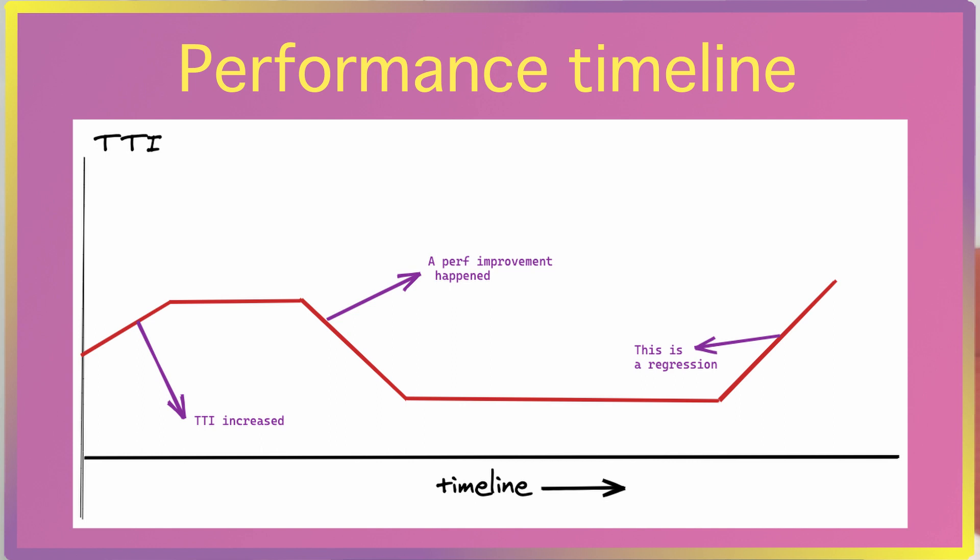Performance is an area where developers are still constantly innovating. What truly prevents a website from slowing down is a perf culture in your development team. Always look at the perf impact of every change you make by making use of good monitoring and alerting. Keep a threshold for the values that you measure, and if the values increase beyond this threshold, raise an alert and fix the issues immediately.